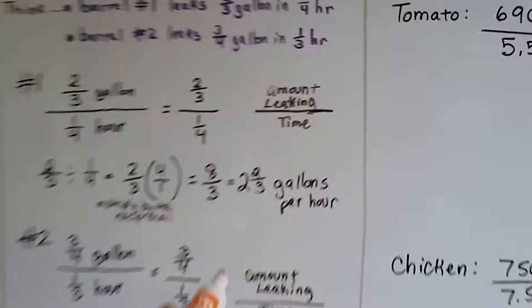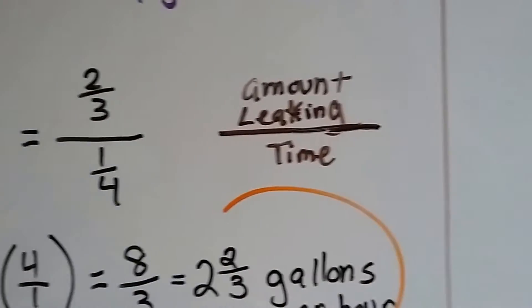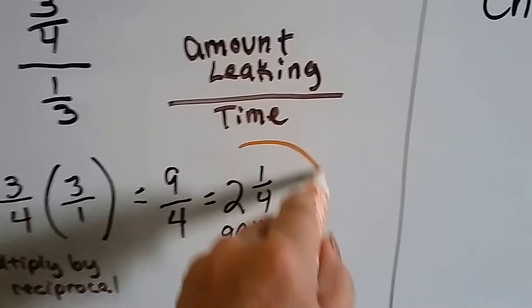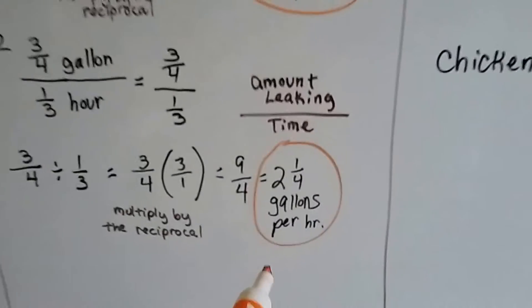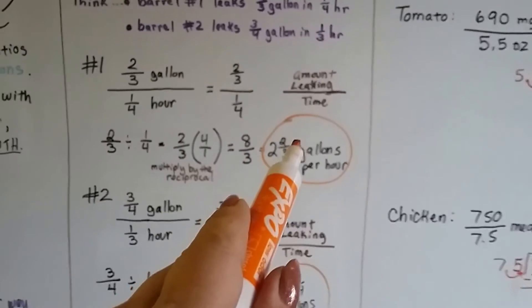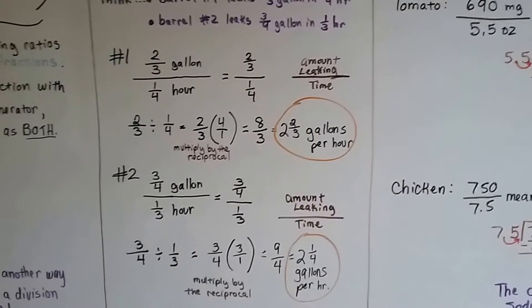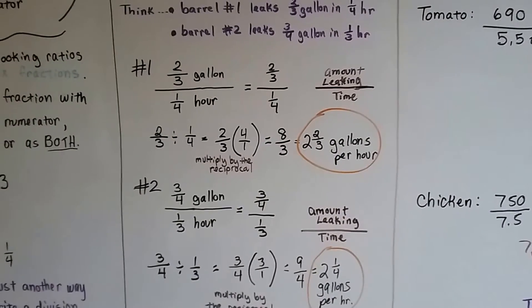Barrel number one is leaking two and two-thirds gallons per hour. And barrel number two is leaking two and a quarter gallons per hour. Well, two-thirds is much bigger than one-fourth. So this one, barrel number one, is leaking faster, isn't it? All right, let's see if we can do some soup.